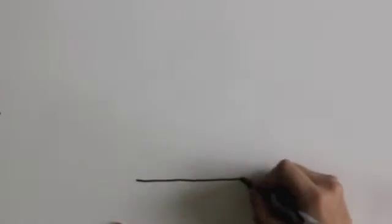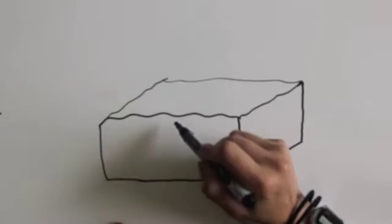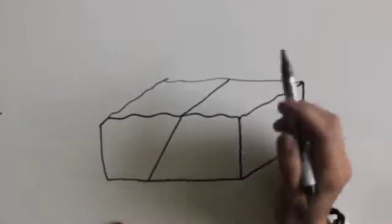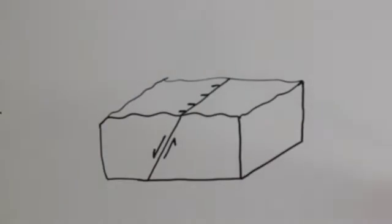Several symbols are used to indicate normal faults. In cross section, we use two half arrows to indicate movement, and in map view, we use hatches on the down thrown block.